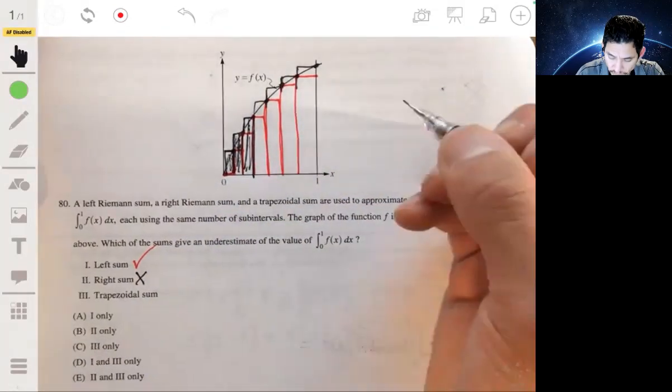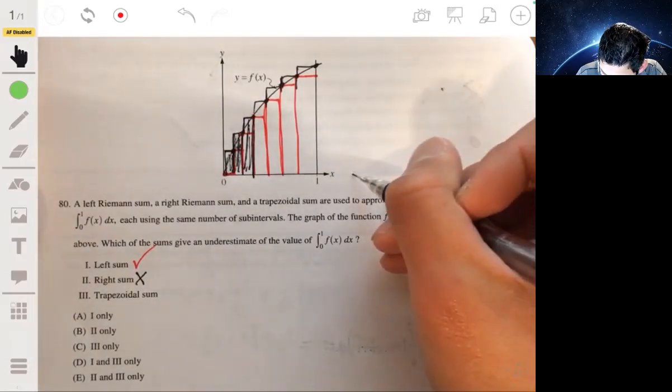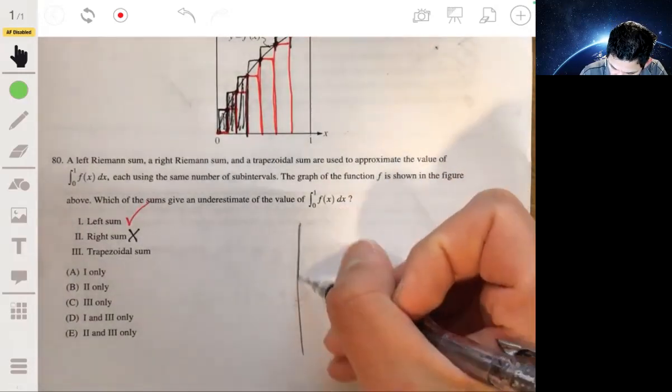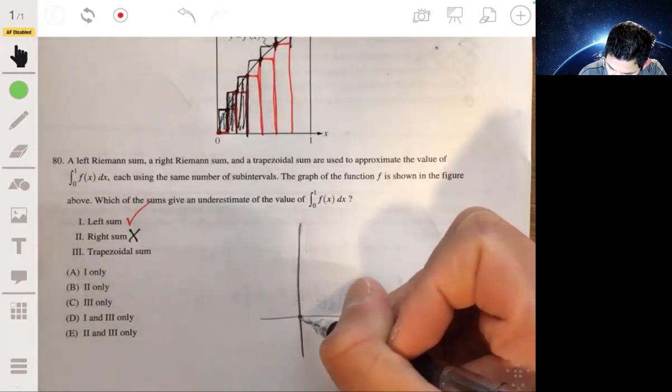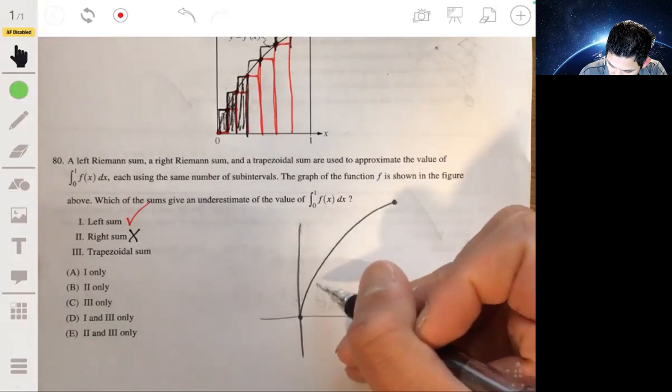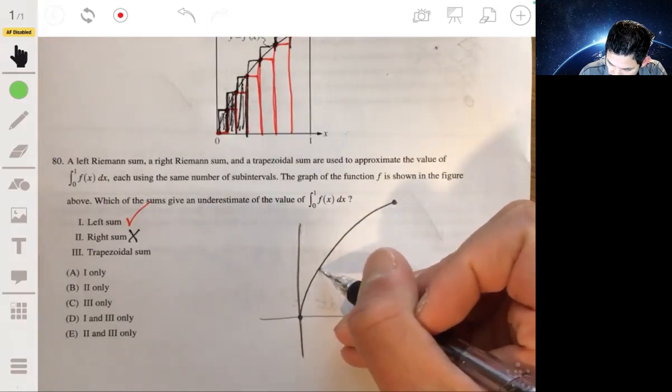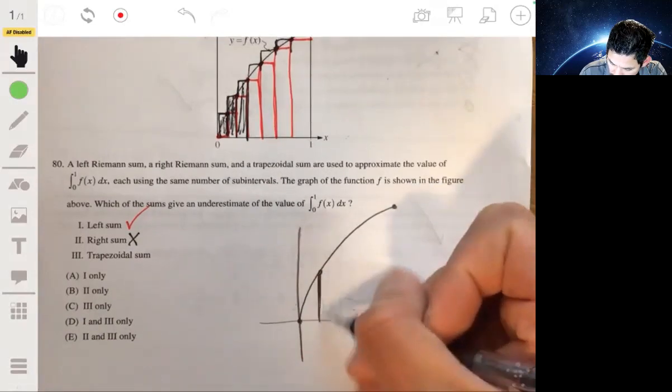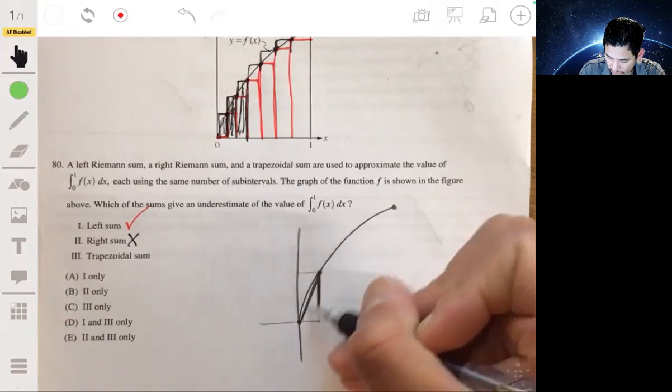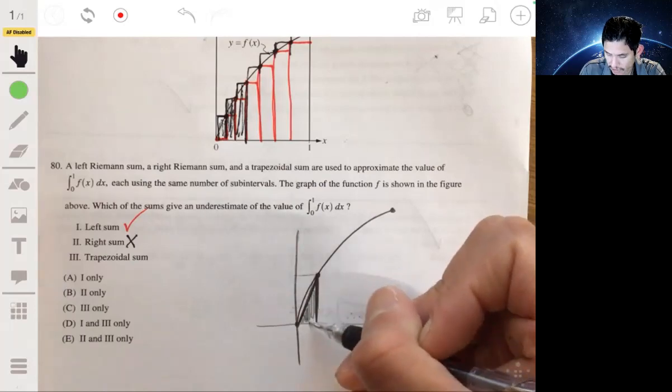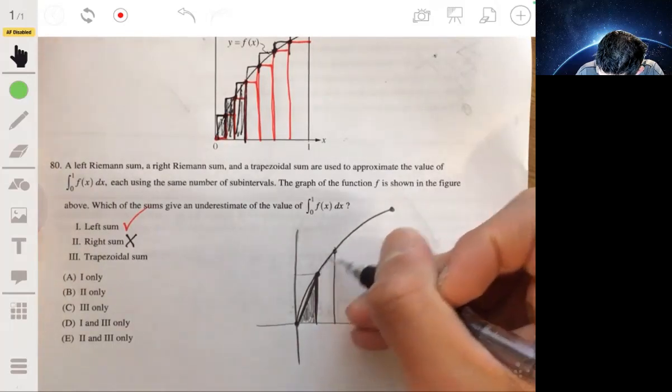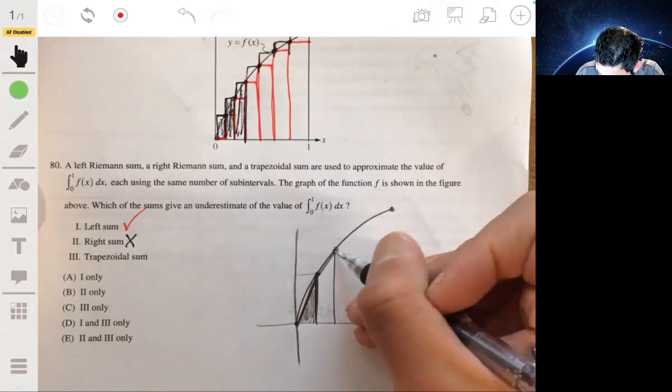Now for a trapezoidal sum, this might be a little better if I draw a zoomed in version to show you what's happening. So we have a graph here that's increasing, but it's concave down. So we have a curve that's going like this. Now, remember the trapezoidal sum, you're literally making trapezoids, but you're connecting them. Instead of connecting them with horizontal lines, like a rectangle, you're connecting them diagonally. So the first trapezoid will look like a triangle. Now the second one would be something like this, and the third one will be something like that.